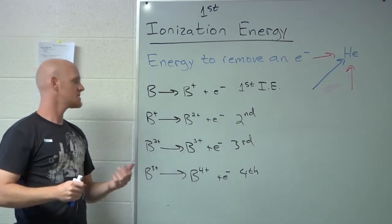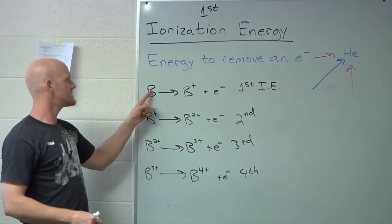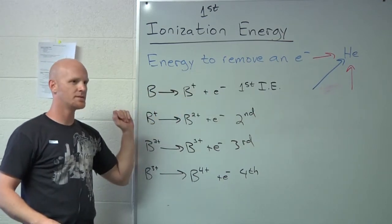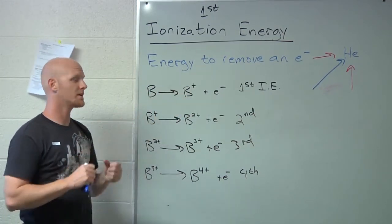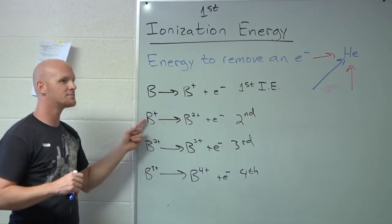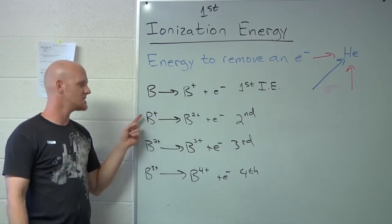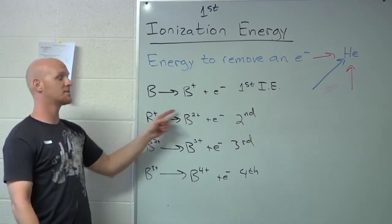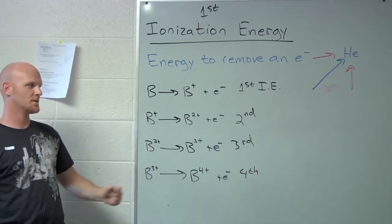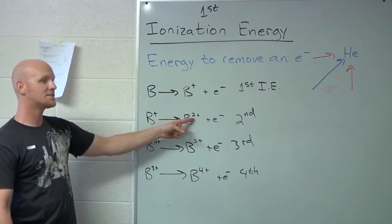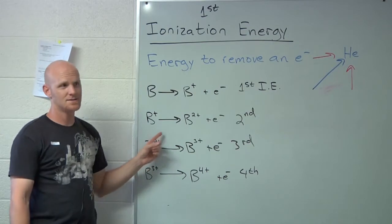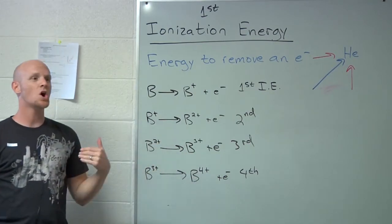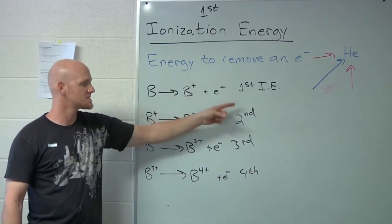As I take away an electron, and it becomes a cation, what happens to the size of the boron? It gets smaller. If I want to pull another electron out, because it got smaller, it's going to take more energy. It will take significantly more. Because it gets even smaller, then if I want to pull out another electron, it gets even more difficult. Ionization energies always increase as you go from first to second to third to fourth.